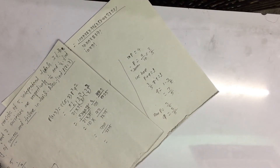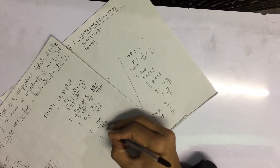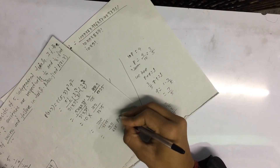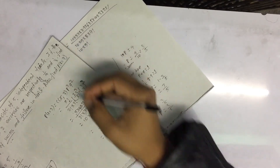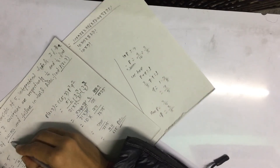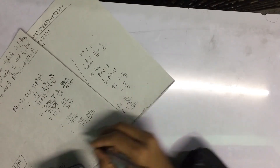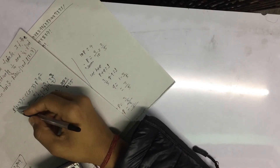So the answer: 720 by 3125, or equivalently 144 by 625. Hence the probability of exactly 3 successes is 144 by 625.